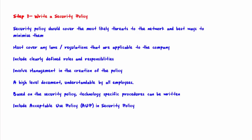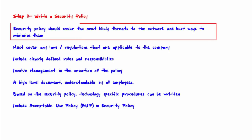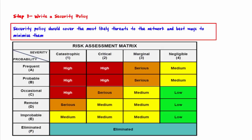Welcome to step one: write a security policy. A security policy should cover the most likely threats to the network and the best ways to minimize them. A risk assessment may be used to determine how likely specific threats are. It will often give a dollar amount that it would cost the company should a particular risk be realized, multiplied by the number of times that risk is likely to occur per year.